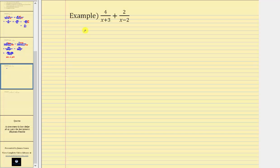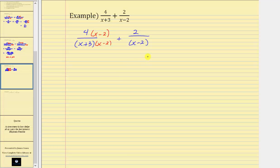For this example, we have four over the quantity x plus three — notice x plus three does not factor — plus two over the quantity x minus two. x minus two also does not factor. Therefore the least common denominator must contain one factor of x plus three and one factor of x minus two. The first denominator is missing the factor of x minus two, so we multiply the numerator and denominator by x minus two. The second denominator is missing x plus three, so we multiply by x plus three.